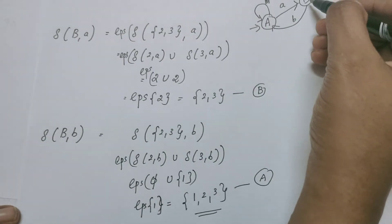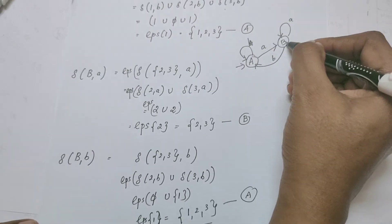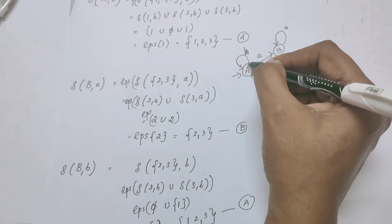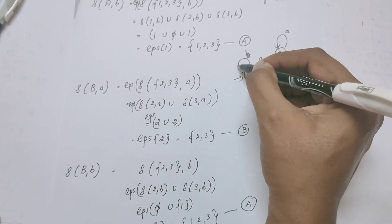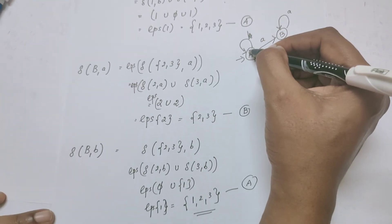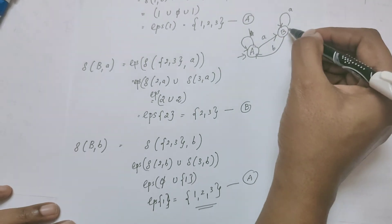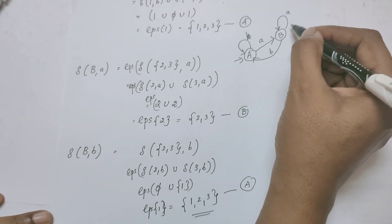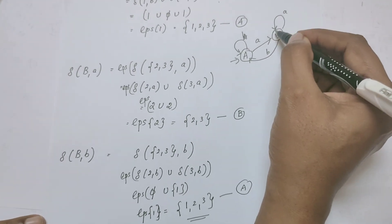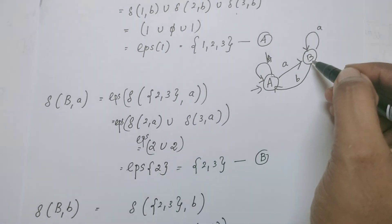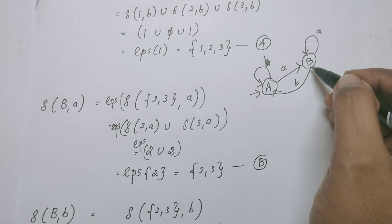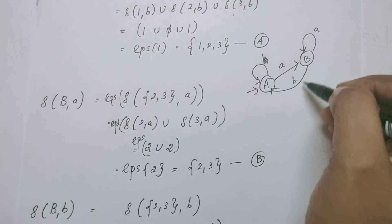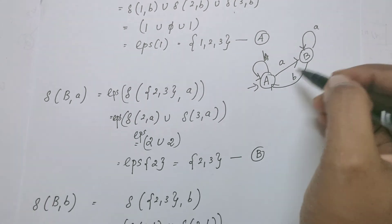To summarize the transitions: from A on reading A it goes to B; from A on reading B it goes to A; from B on reading A it goes to B; from B on reading B it goes to A.